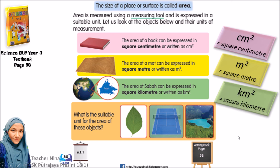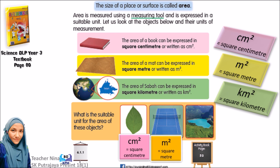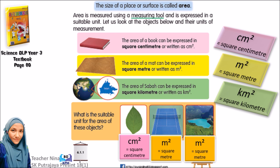Now look at these three examples. What is the suitable unit for the area of these objects? The first object is a leaf — square centimeter. What about this tennis court? Square meter. And this is the Blue Lake. I would say we can use square meter too. What do you think?